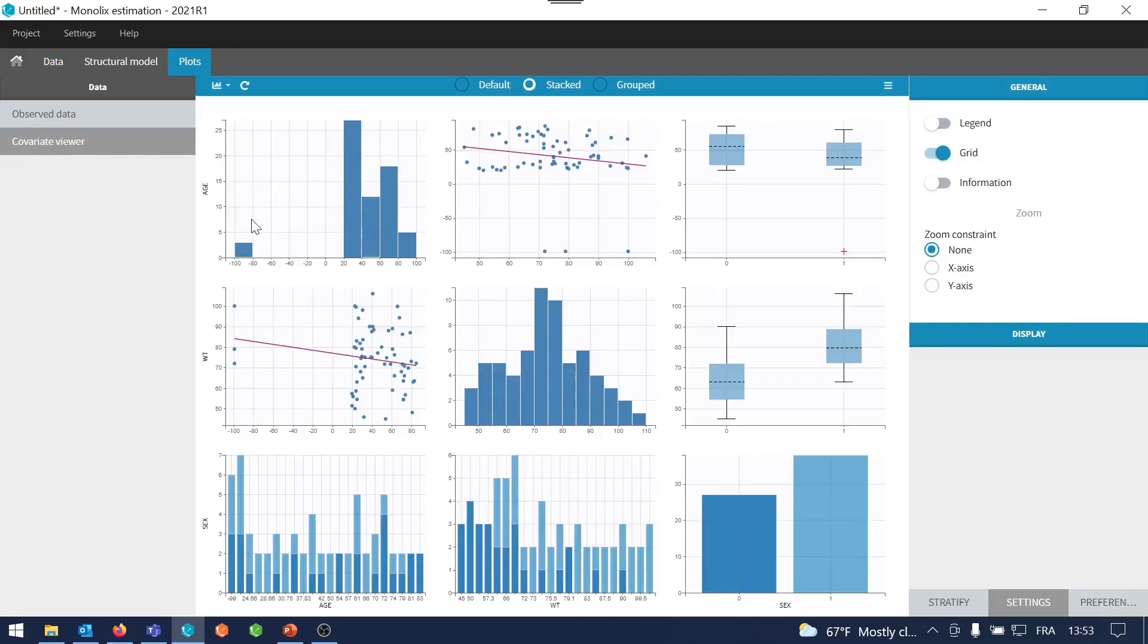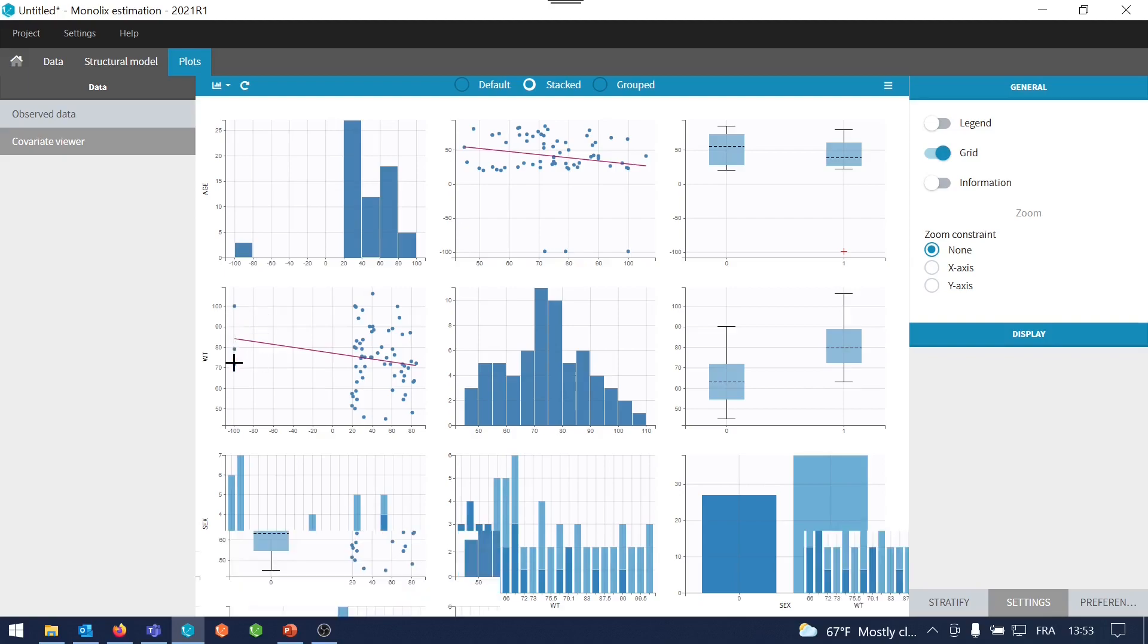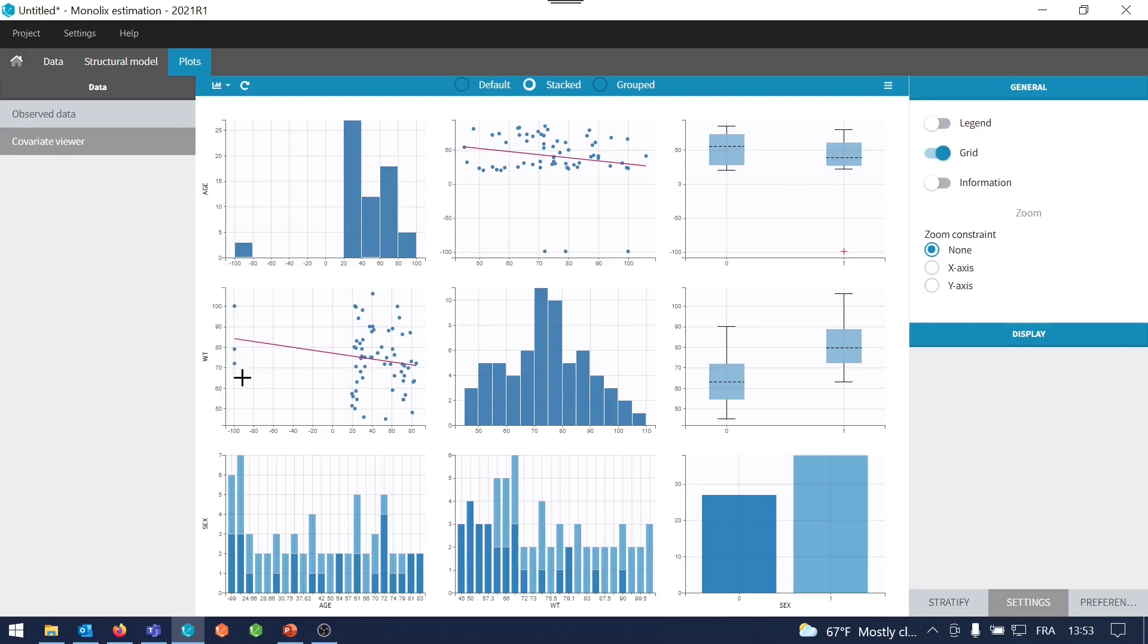And in the covariate viewer, I can directly spot that some individuals are out of range for age. When I hover on a dot here, I can see that this is id16, id9 and id1. So these three ids have a missing value for age.